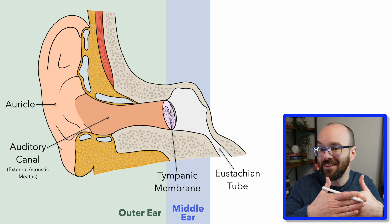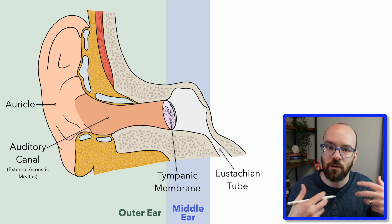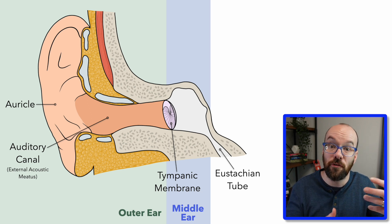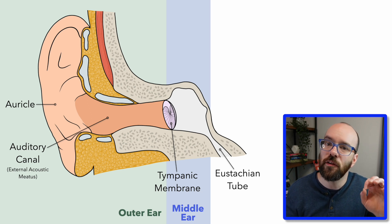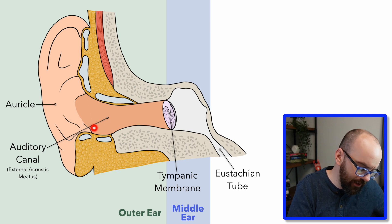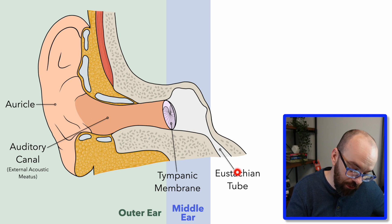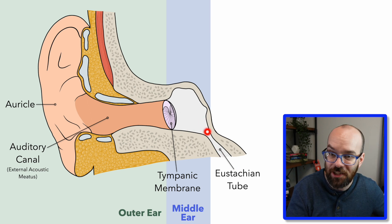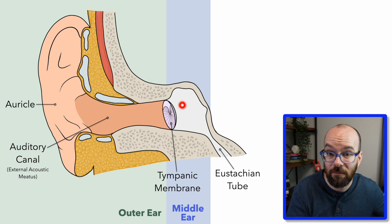The eustachian tube isn't held open all the time, so you might need to chew gum or swallow to allow air to pass in and out. Also, if you've ever had an ear infection, it tends to generally be in the middle ear, where bacteria have made their way up through the eustachian tube and are infecting that area.